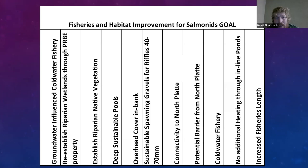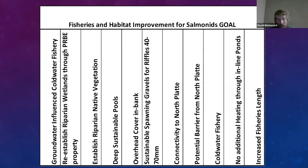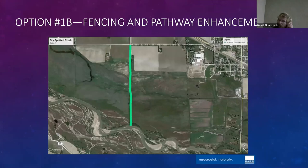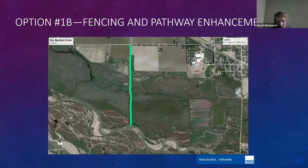I limited the MCDA to just one goal at a time. The goal was improved fisheries and habitat for salmonids. Inside that we had: groundwater-influenced cold water fishery, no perching of the stream, re-establishing and repairing wetlands, establishing vegetation, deep sustainable pools, overhead and bank cover, sustainable spawning gravels in the riffles, and connectivity to the North Platte with a potential barrier option.